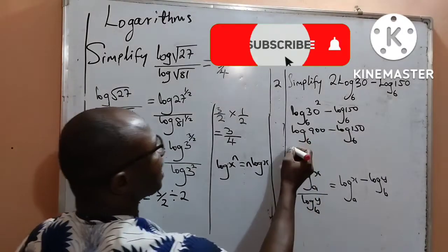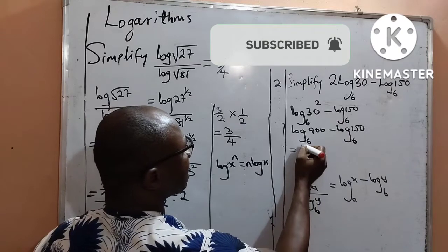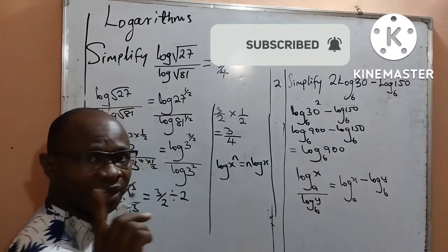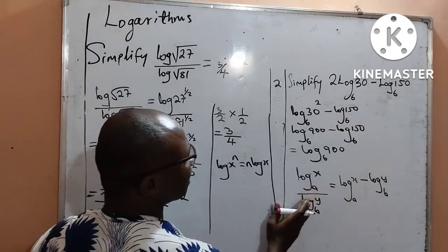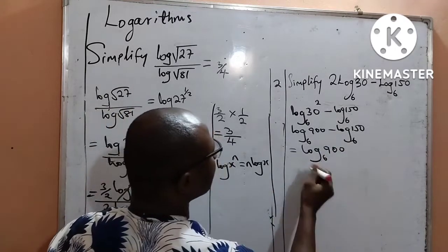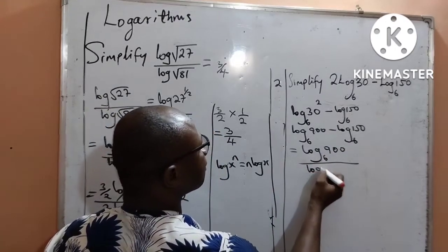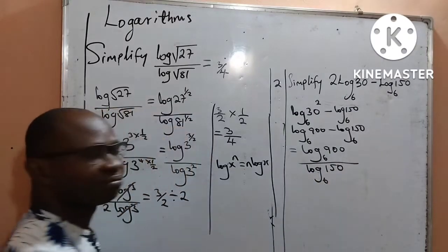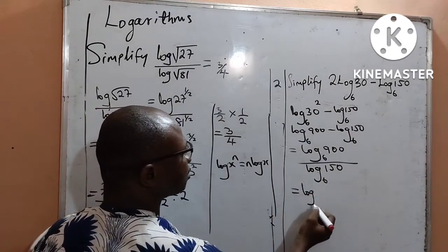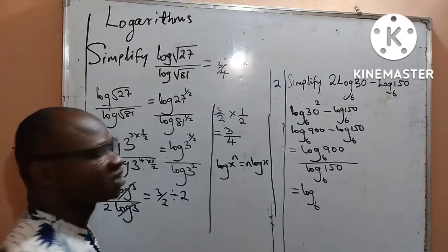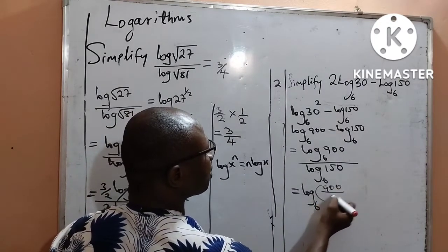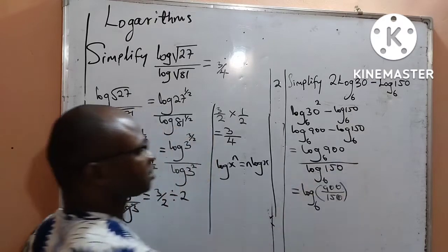Therefore, I shall be writing this as the log base 6 of 900 divided by 150. From what I have now, I can write it as log with one common base 6, of the bracket 900 all over 150. I have applied that log law beautifully.